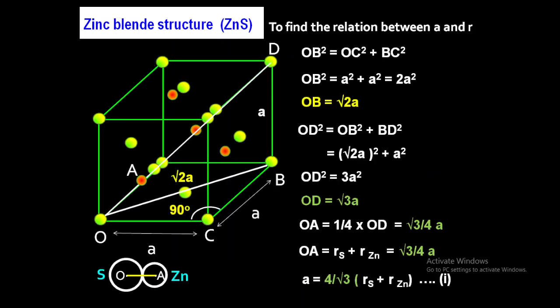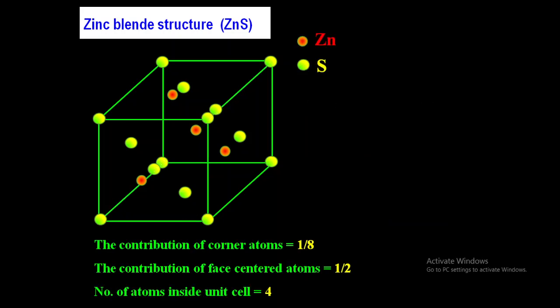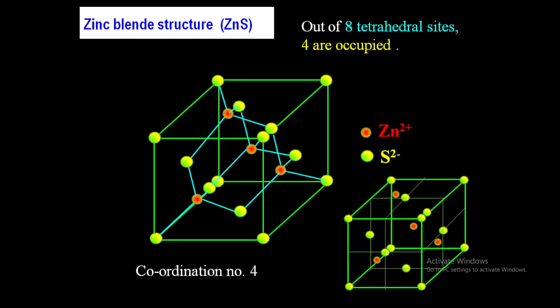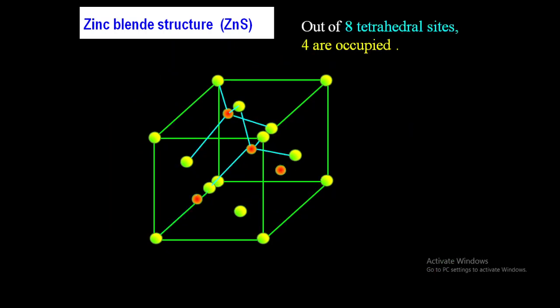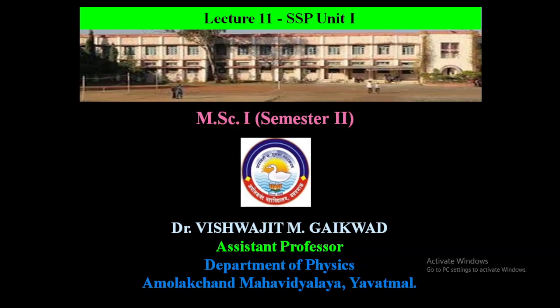This is the way to calculate the packing fraction for zinc blende structure. Today we have seen how to calculate the packing fraction, how to establish the relation between a and r, how to construct zinc blende structure, how to find its coordination number, and how to find the number of atoms per unit cell. In this way, we have studied zinc blende structure in detail. Thank you.